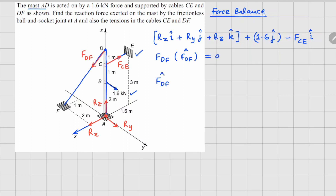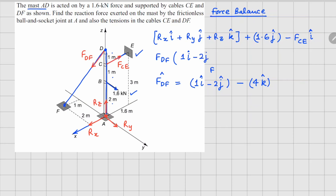The F_DF unit vector points from D to F. The coordinates of point F minus coordinates of point D give us: 1 i-cap minus 2 j-cap, and going upward: minus 4 k-cap. So the vector from D to F is (1 i-cap minus 2 j-cap minus 4 k-cap).